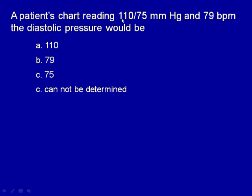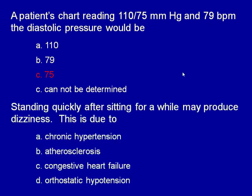For a patient charted at 110 over 75 mmHg and 79 beats per minute: the diastolic pressure is 75 mmHg — the lower number of the blood pressure reading. The 79 is the heart rate and 110 is the systolic pressure. Standing quickly after sitting may produce dizziness due to orthostatic hypotension — a drop in blood pressure from pooling in the extremities and a slightly slow sympathetic vasoconstriction response. Atherosclerosis contributes to poor circulation, while chronic hypertension typically has few symptoms until well-advanced.